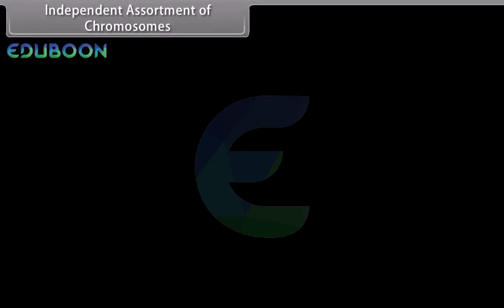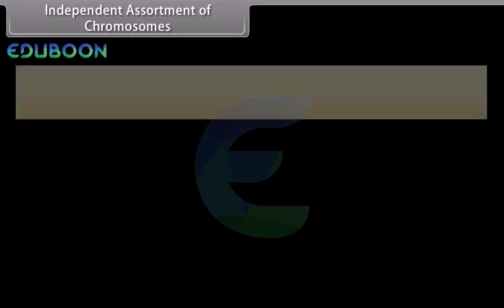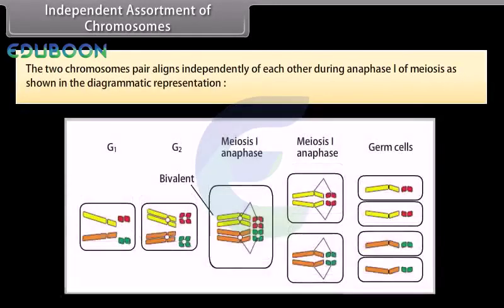The two chromosome pairs align independently of each other during anaphase 1 of meiosis, as shown in the diagrammatic representation.